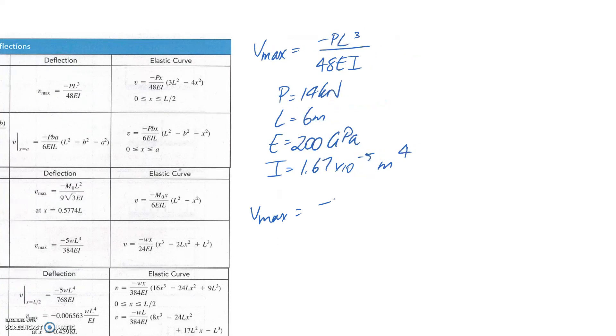So all that we need to do is substitute these things into our equation. And I'm going to convert everything into base units. So this is 14,000. Length is already in base units, so 6 to the power of 3. 48 is just a number. E, we've got 200 GPa, so we need to multiply by 10 to the 9 to put it in base units of pascals. And I already have in base units as well.